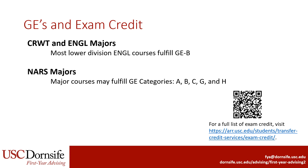Now let's talk about GEs and exam credit. There are no AP, IB, or A-level exams that will count towards the major requirements for Creative Writing, Literature, or Narrative Studies majors. There are options to overlap major requirements with GEs, however. English Creative Writing and Literature majors can fulfill their GEB requirements with most of the lower-division English department courses applicable to their major. For Narrative Studies, you can take courses in several different departments and may fulfill GE categories A, B, C, G, and H, depending on the courses that you pick.